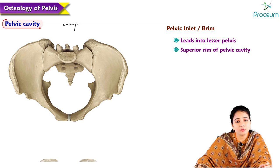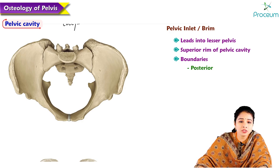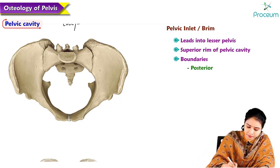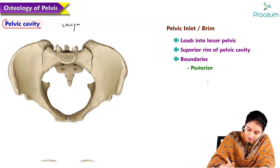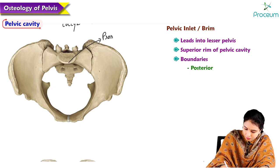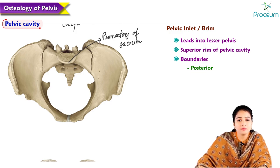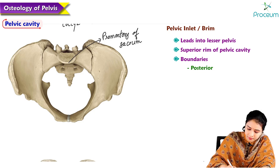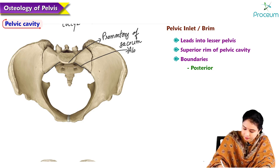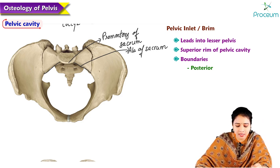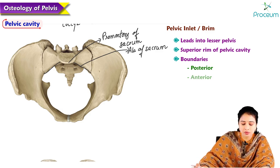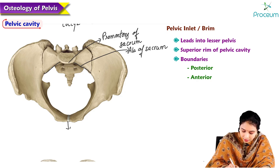The pelvic inlet is bounded posteriorly by the promontory of the sacrum and the anterior border of the ala of the sacrum, forming the sacral part on the posterior aspect of the pelvic inlet.